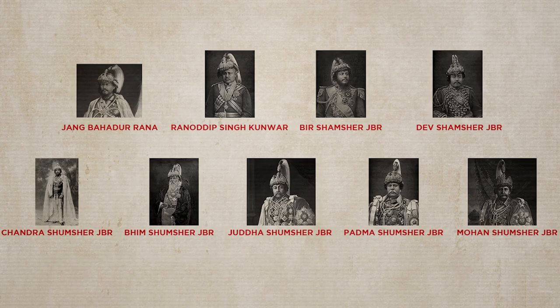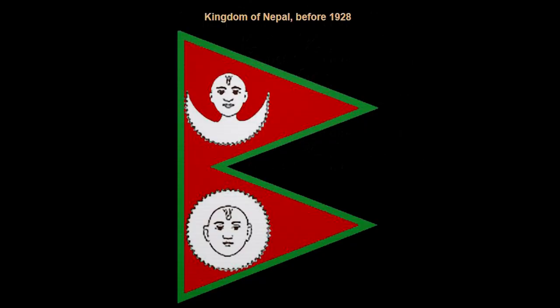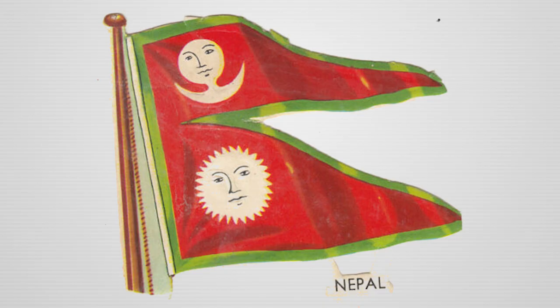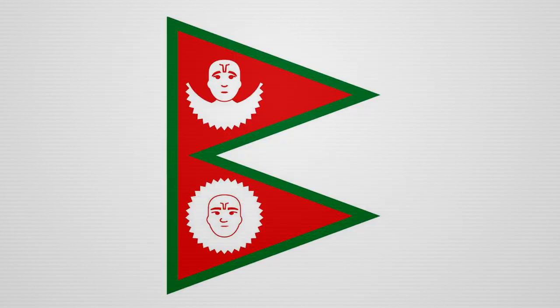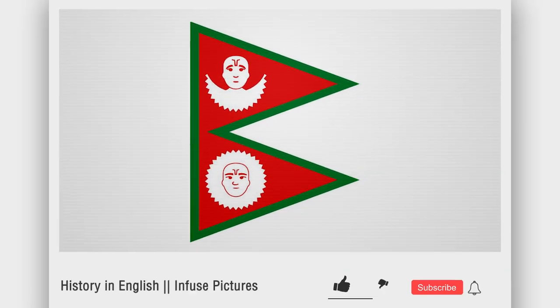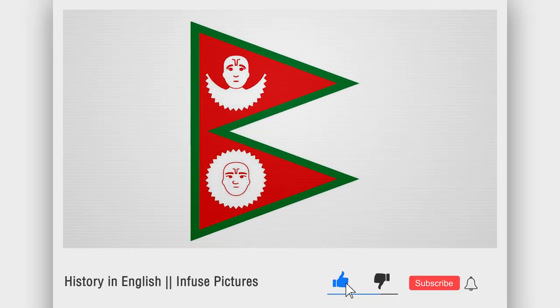After 1850, the country was ruled by the hereditary run of prime ministers, and a flag was adopted that combined two crimson pennants belonging to rival branches of the Rana dynasty. On the upper pennant, a moon symbol represented the royal house, and the sun on the lower pennant represented the Rana family. The faces were sewn with ears and a tilak, the sign of Vishnu on the forehead. The flag's border was green at first, before 1928.